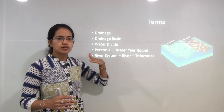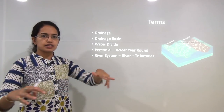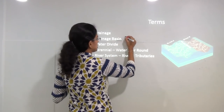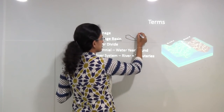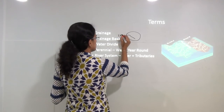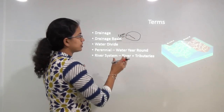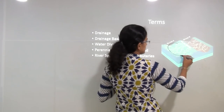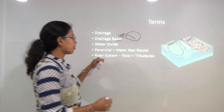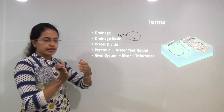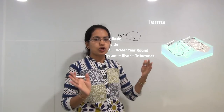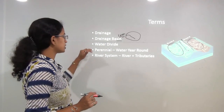So what is drainage? Drainage is the river that covers a certain area. What is a drainage basin? A drainage basin is the area drained by a single river. Now if there are two rivers, one draining this region and another draining this region, the center region becomes a water divide — a demarcation between the two drainage basins.